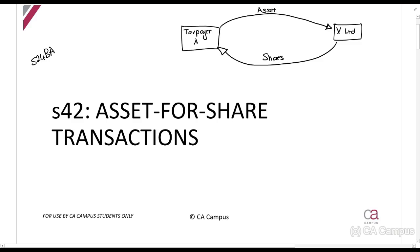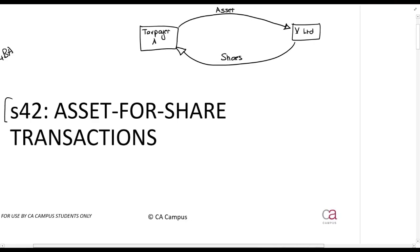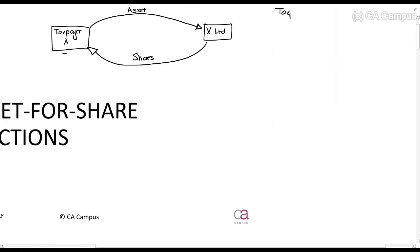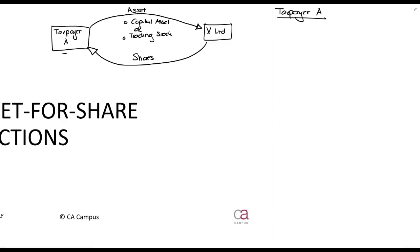Section 42 should be considered when there's an asset for share transaction. It's important to note what percentage of shares are required — we'll answer that shortly. First, let's recap the normal tax implications. The asset given can be either a capital asset or trading stock. In a normal transaction — where you don't know about corporate rules or corporate rules do not apply — they can agree in writing that they don't apply.